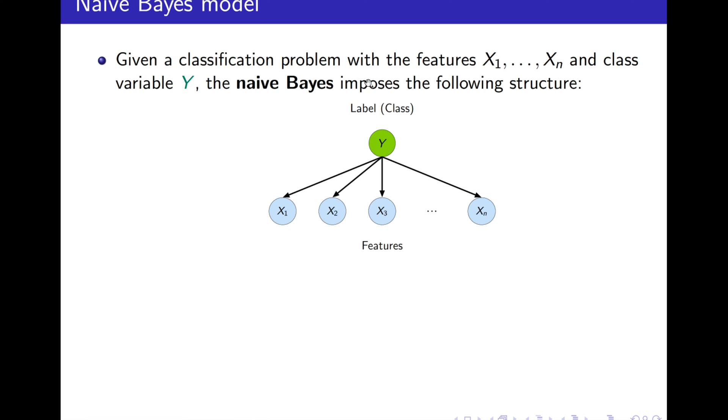Before answering that, let's make things more formal. Given a classification problem with the features X1 to Xn and class variable Y, the naive Bayes imposes the following structure.